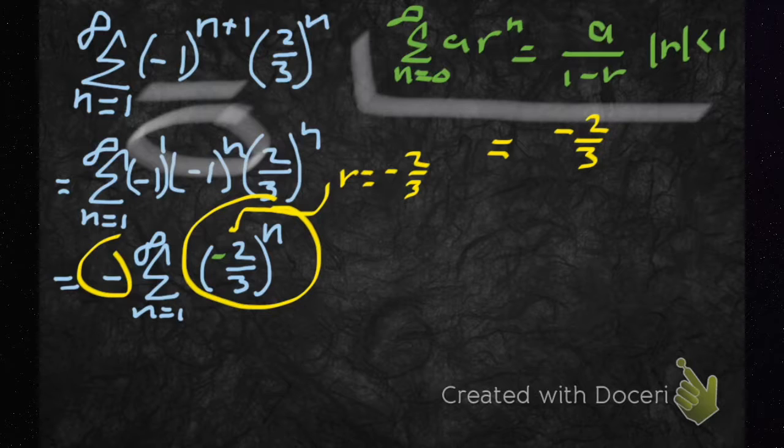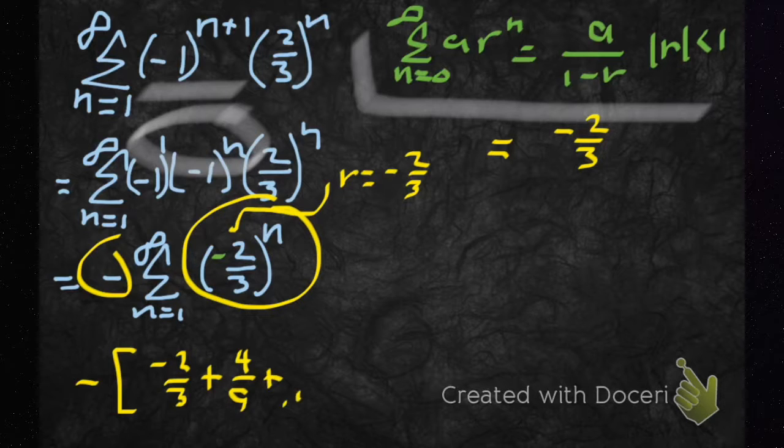When n is 1, this has a minus sign outside, and then that's minus 2 thirds plus 4 ninths, and it keeps going like that.